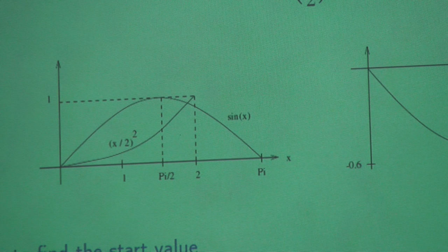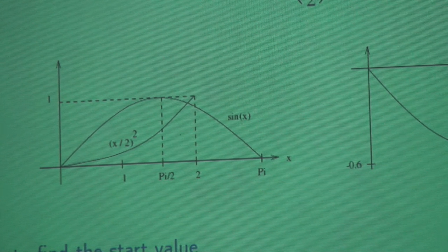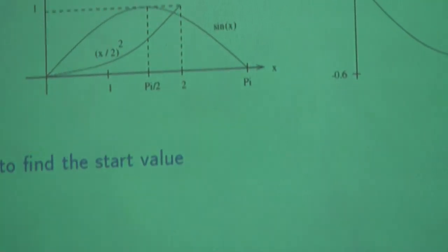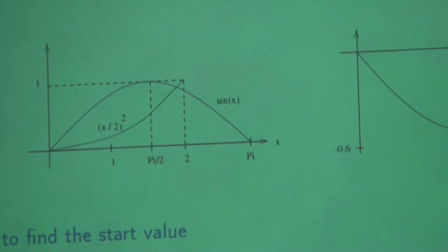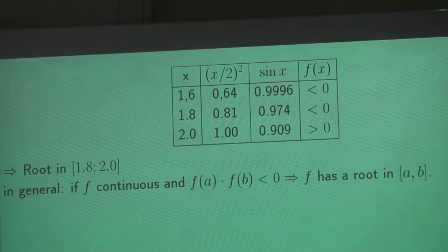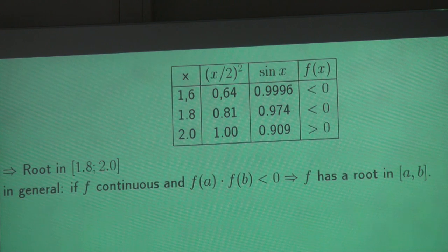That's good, first of all, to check the solution we get, whether it's correct. And secondly, which is important for most of the algorithms we will see, to have a starting value. So we could use as a starting value two or pi half, which is not too far from the solution.